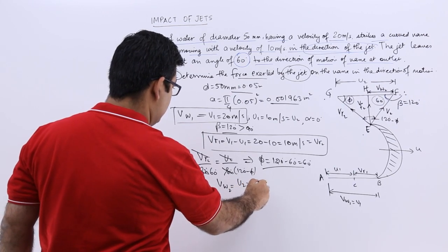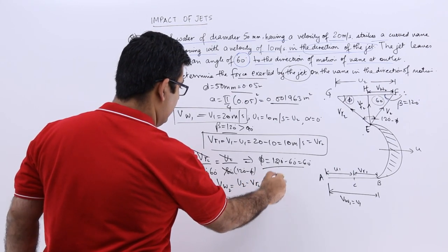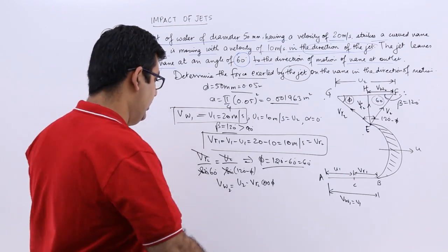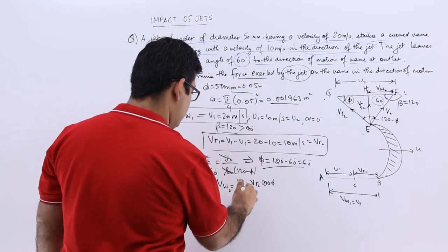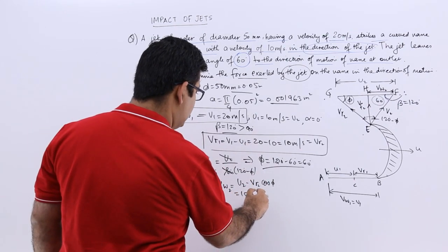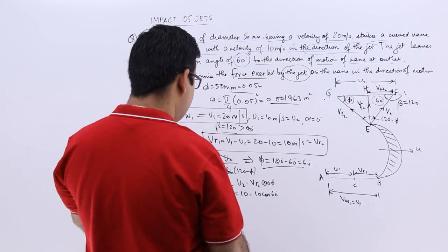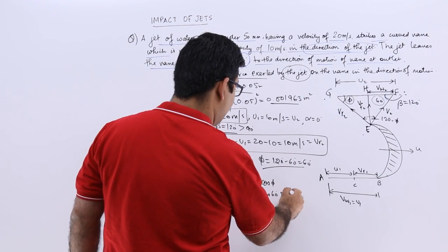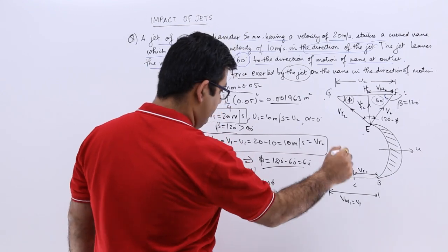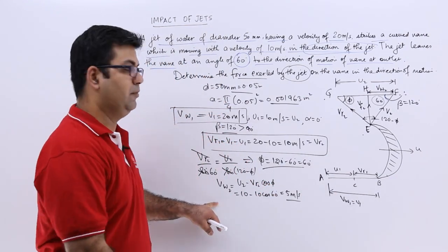So vw2 from there, this is equal to u2 minus vr2 cos phi. So u2 is 10 minus 10 cos 60. So this will give you vw2 as 5 meters per second.